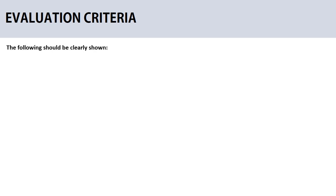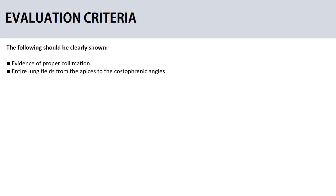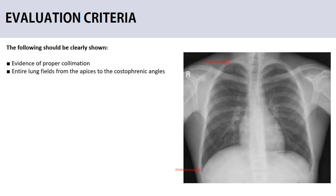Once the chest x-ray is done, here are some factors to check to ensure it is properly performed. Evidence of proper collimation: from top to bottom you should clearly visualize the apex and the bases of the lungs and the costophrenic angles. Also check for no rotation — even a slight amount of rotation results in distortion of the size and shape of the heart and hilum.